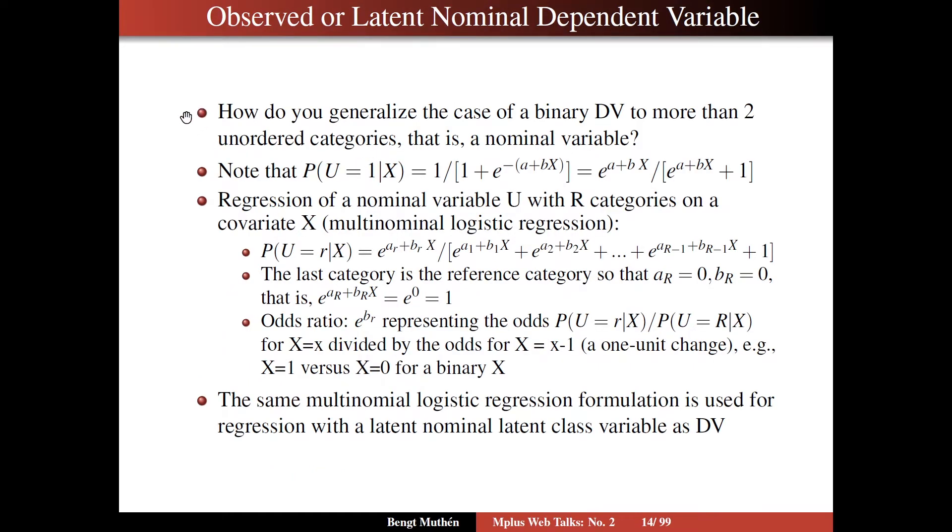Now we talked about the case of a binary dependent variable. How do you generalize that to more than two categories and to unordered categories? Because we have different models for unordered and ordered categories, ordinal variables versus nominal variables. Well, you can note then that you can rewrite this expression that we looked at, the logistic regression, in this case for only one x, to write it in a different form, algebraically equivalent form, but in a form that can easily be generalized to more than two categories. So here you have the regression of a nominal variable U with r categories on a covariate X. You're then looking at multinomial logistic regression.